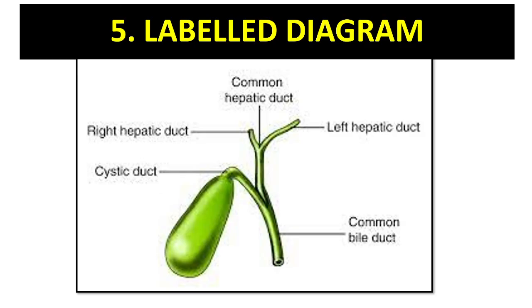Tip five: label diagrams. In the exam, remember you need to write labeled diagrams — for example, brachial plexus, gallbladder, liver. You need to label them properly, as this will give you more marks. For example, if a question about the bile duct is asked, you need to do the proper labeling.